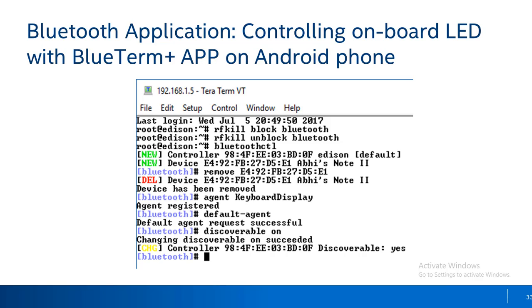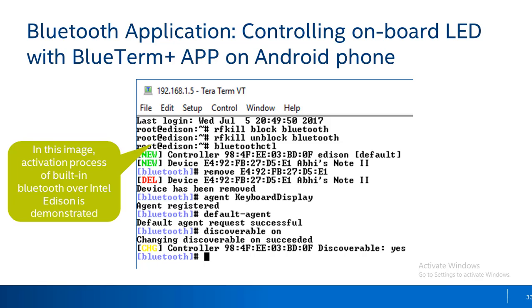Open another instance of PuTTY or TeraTerm, connect to Intel Edition board via serial and log in. Now we have two instances of TeraTerm running — one with SSH where the Python program is running, and another connected to the board via serial, which will be used to enable and access the built-in Bluetooth module. In this slide, the process to enable onboard Bluetooth, register the agent, and make the device discoverable is shown, which must be done to make onboard Bluetooth accessible by the target device.